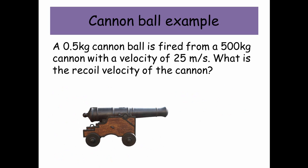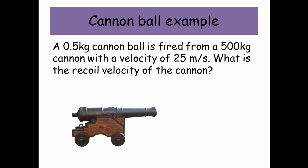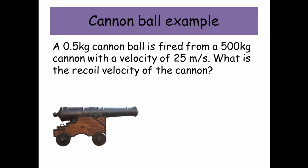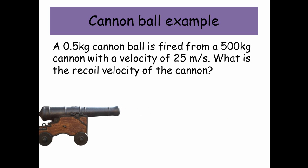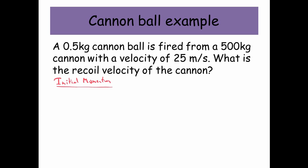Cannonball example. A 0.5 kilogram cannonball is fired from a 500 kilogram cannon with a velocity of 25 meters per second. What's the recoil velocity of the cannon? So if the cannonball gets shot forwards, the cannon itself is going to fly backwards. So the initial momentum is actually 0. Why is it 0? Because nothing's moving.